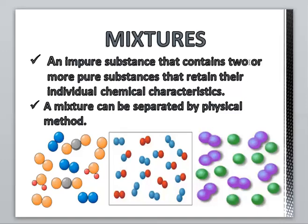A mixture is a substance that contains two or more pure substances that retain their individual chemical characteristics — they are physically mixed but not chemically combined. A mixture can be separated by physical methods. Here is an example of such a mixture.